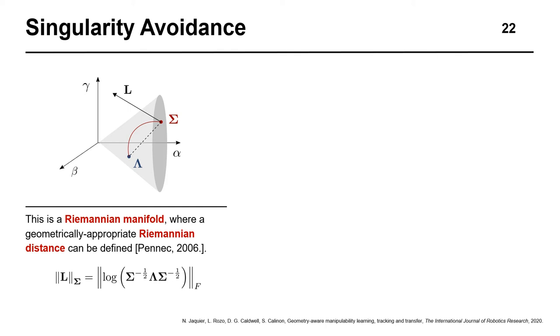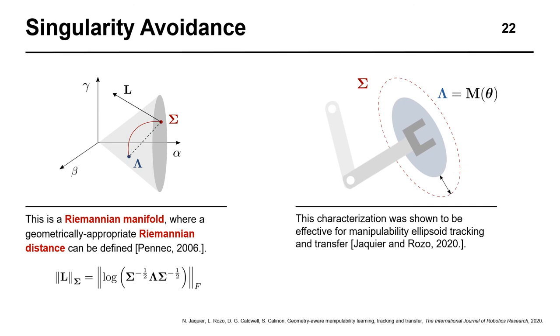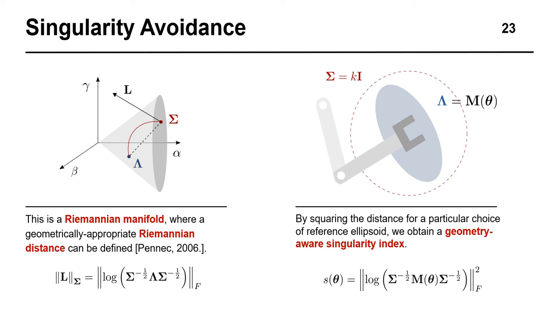This geometric description allows us to reason about the differences between two ellipsoids. In fact, it has recently been shown that this characterization can be used to successfully perform manipulability ellipsoid tracking and transfer. Building on this work, we derive a differentiable geometry-aware singularity index, defined as the squared Riemannian distance between the current manipulability ellipsoid and a larger spherical ellipsoid enveloping it.